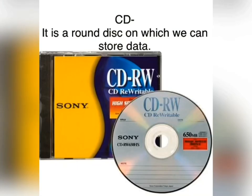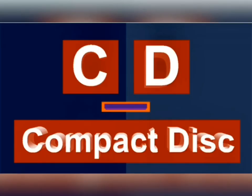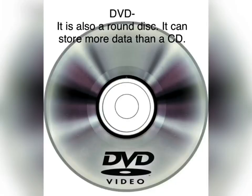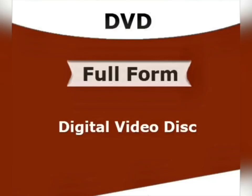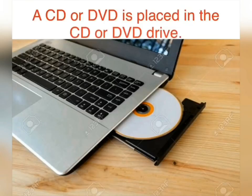CD: A CD is a storage device. It is a round disc on which we can store data. The full form of CD is Compact Disc. DVD: It is also a storage device and a round disc. It can store more data than a CD. The full form of DVD is Digital Video Disc, and it is also called Digital Versatile Disc. A CD or DVD is placed in the CD or DVD drive.